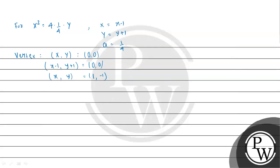Similarly, the focus in standard form is at coordinates (0, a). Setting X equal to 0 and Y equal to a, we get x minus 1 equal to 0 giving x equal to 1, and y plus 1 equal to 1/4 giving y equal to 1/4 minus 1, which equals minus 3/4. So the focus is at (1, minus 3/4).